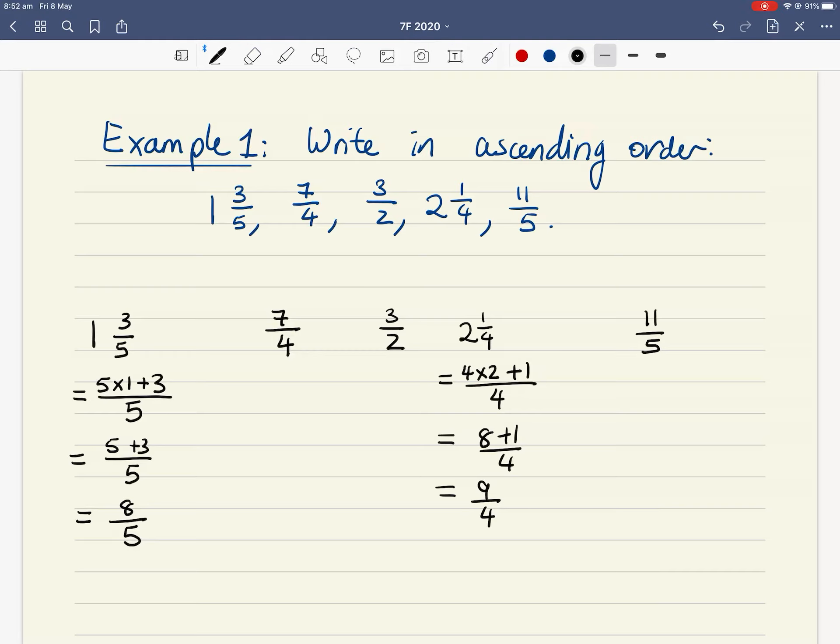Step 1, convert everything to improper fractions. Step 2, do all our fractions have the same denominator? I have a denominator 5, denominator 4, denominator 2, denominator 4, denominator 5. So the answer is no, because we have three different denominators: 2, 4 and 5. So we need to look at what is the lowest common denominator then. LCD, what's the lowest common multiple between 2, 4 and 5? Well, if you look at the multiples of 2, 4 and 5, the lowest common denominator, or the lowest common multiple between these three numbers is 20. Because 5 times 4 is 20, 4 times 5 is 20, and 2 times 10 is 20. So LCD is 20.